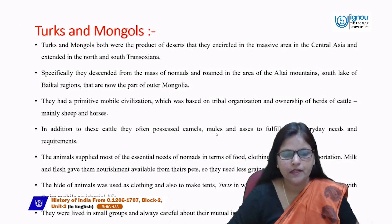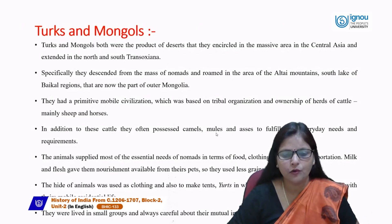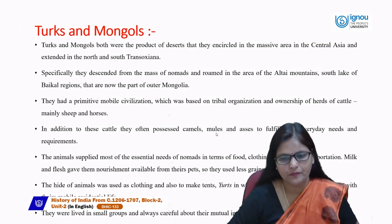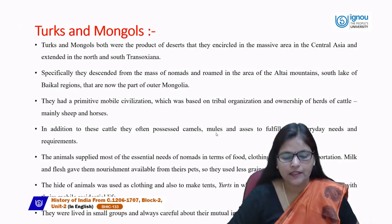The animals supplied most of the essential needs of these nomads in terms of food, clothing, shelter and transportation. Milk and flesh gave them nourishment from their livestock, so they used less grain. The hide of animals was used as clothing and also to make tents — called yurts — in which they lived their mobile residential life. These tribes lived in yurts in small groups and were always careful about their mutual interests.